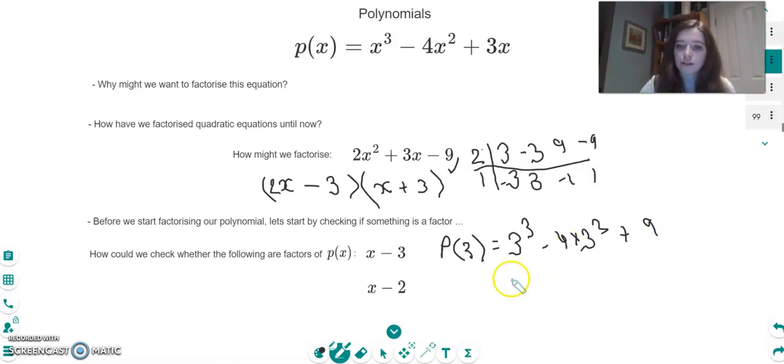Now what does this give us? We've got 27 minus 4 times 9, that's 36, plus 9. So what we've got really is 36 minus 36. So that does give us 0. So just by some really simple maths there, we found out that yes, x minus 3 is a factor of this equation.